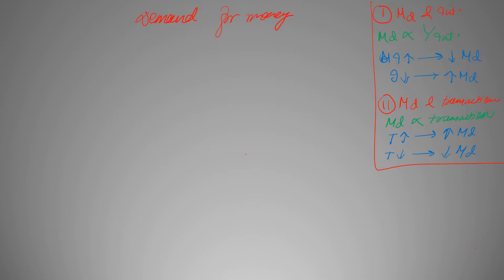Now if you remember that in previous videos while learning Fisher's approach which was MV is equal to PT, we replace this T with Y because the number of outputs in an economy decides the number of transactions that is eventually going to happen.